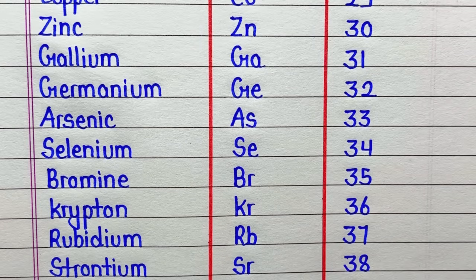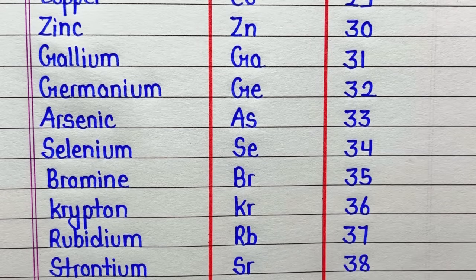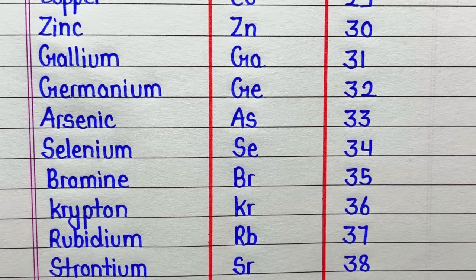Arsenic, symbol is As, atomic number is 33. Selenium, symbol is Se, atomic number is 34. Bromine, symbol is Br, atomic number is 35. Krypton, symbol is Kr, atomic number is 36.